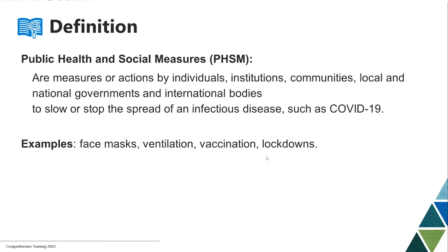This is how WHO defines public health and social measures. These are measures or actions by a whole range of stakeholders — individuals, institutions, communities, local and national governments, as well as international bodies — and they serve to either slow or stop the spread of infectious disease, such as COVID-19.